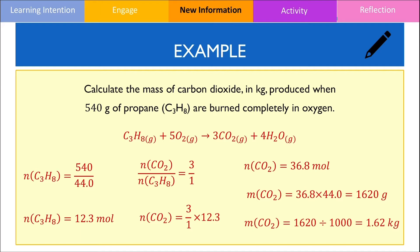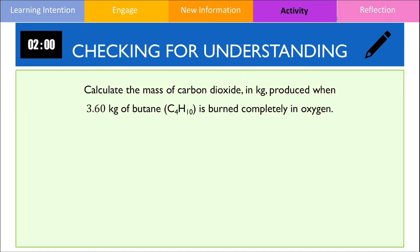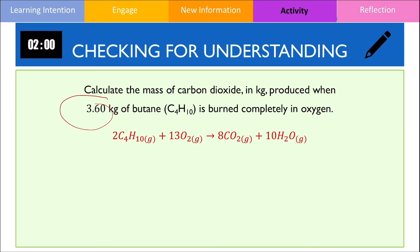I would now like you to have a go with a similar problem. Pause the video and give yourself 2 minutes to come up with a solution, then resume when you're ready to evaluate your answer. We start off by writing the chemical equation for the combustion of butane, then calculate the number of moles of butane by dividing its mass by its molar mass. Keep in mind that mass needs to be expressed in grams, so I've multiplied 3.6 by 1000 to get 3600 grams. The amount of moles of butane should equal 62.07 moles.